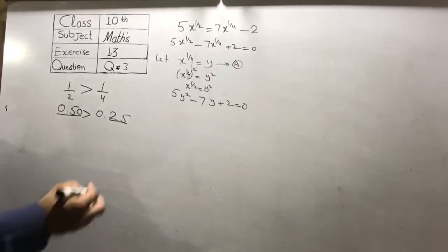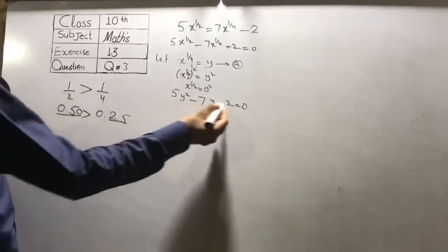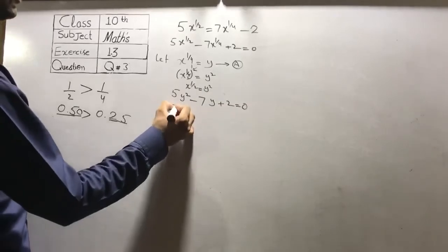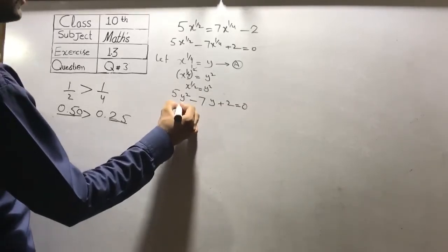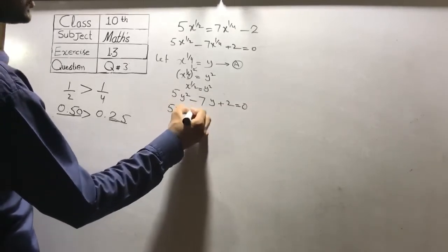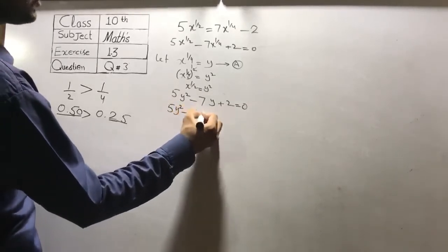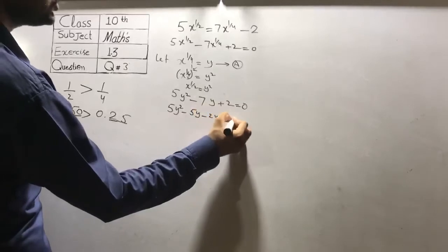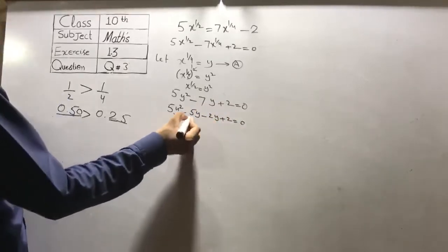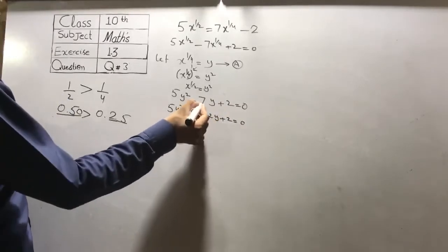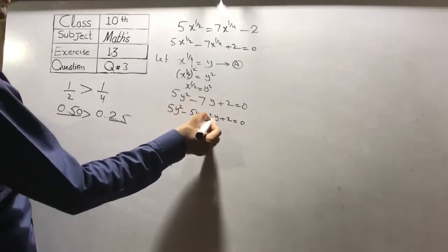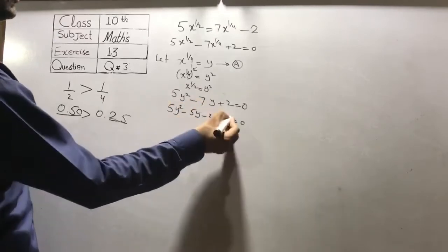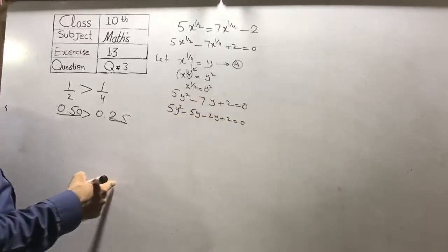Now we factorize it. 5 multiplied by 2 is equal to 10. We split the middle term: 5y squared minus 5y minus 2y plus 2 is equal to 0. When we add up we get minus 7, and when we multiply we get 10, as 5 multiplied by 2 is equal to 10.